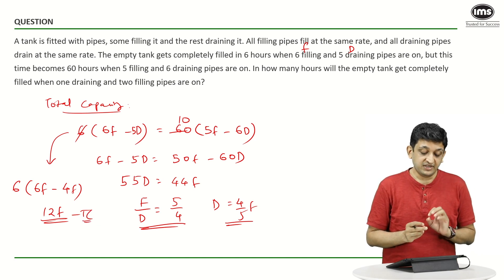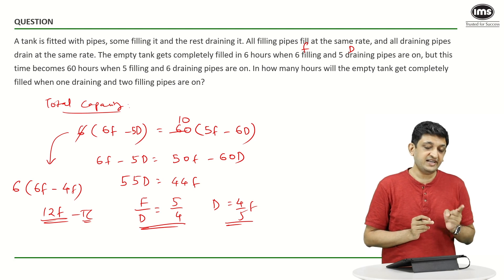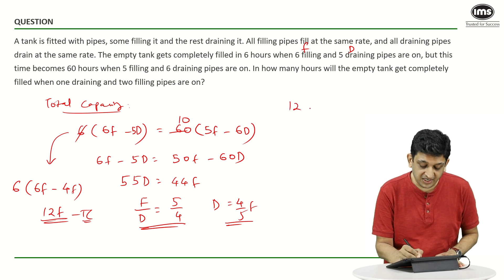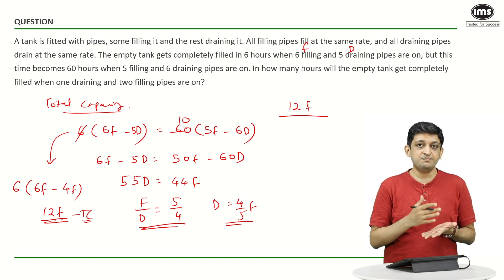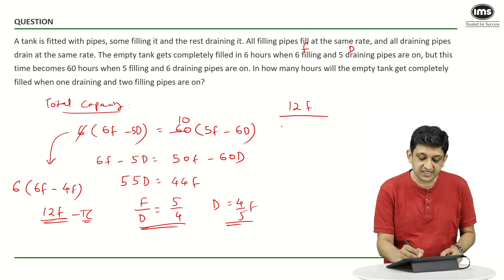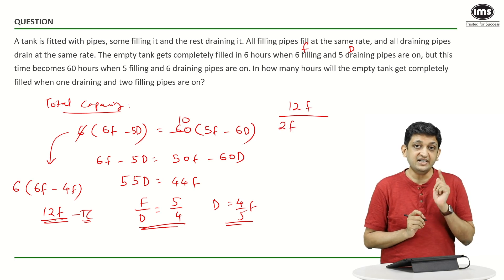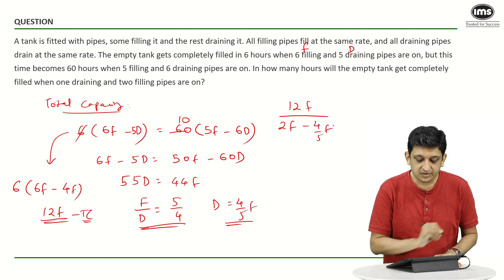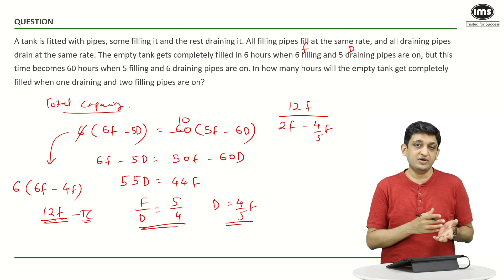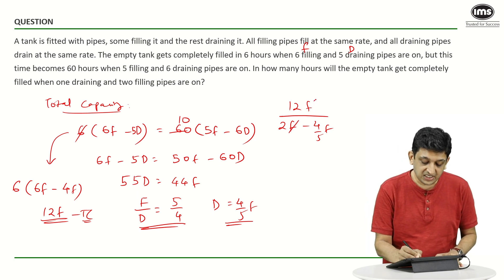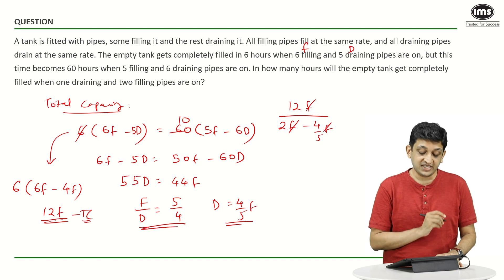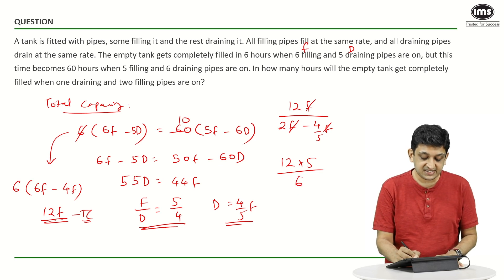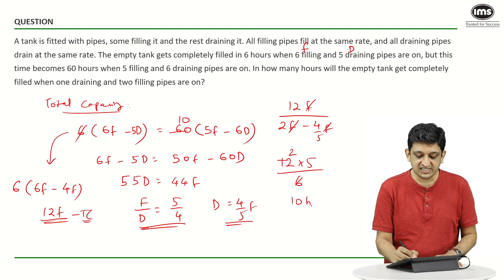So, this is the total capacity. Now, what do we have to do? We have to understand how much time is it going to take for 1 draining and 2 filling pipes to fill this particular tank. Now, we have to fill 12F and this is being done at what speed per hour? 2 filling pipes are there, so they will fill 2F, and there is 1 draining pipe which will drain 1D or 4 by 5F. So, 12F divided by 2F minus 4 by 5 times F. If you cancel out an F from all 3 terms that we have here, you are going to get 12 into 5 divided by 5, 2s are 10 minus 4 that is 6. So, you are going to get the answer as 10 hours.